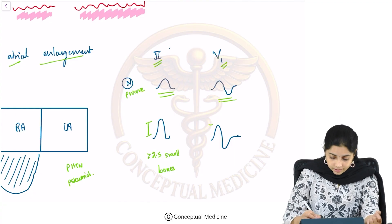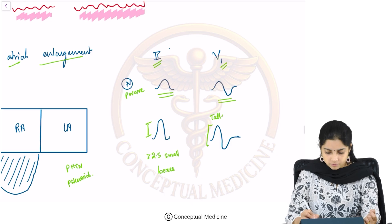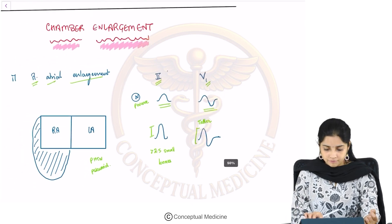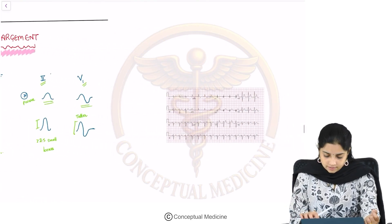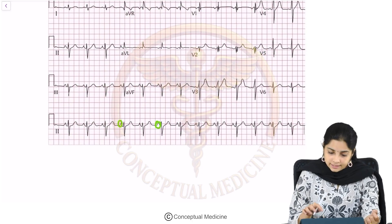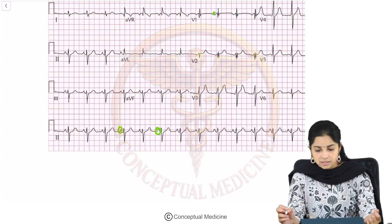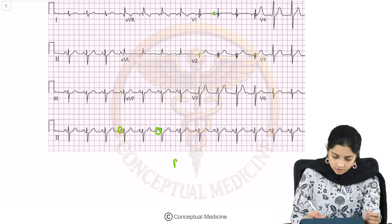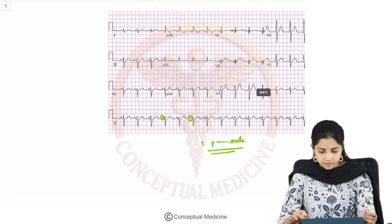Or in lead V1, the initial part of the biphasic P wave is taller. Looking at this ECG, you can see tall P waves, and in lead V1 the initial portion is more upright. This is what we call P pulmonale.